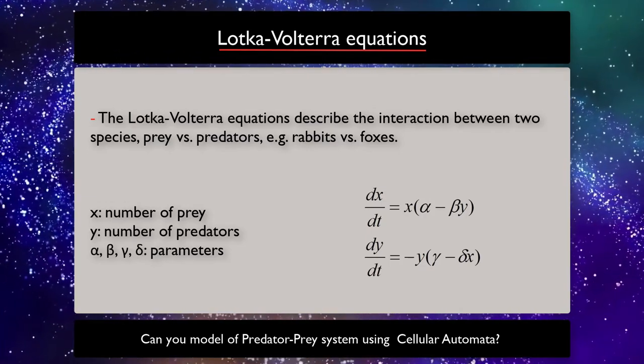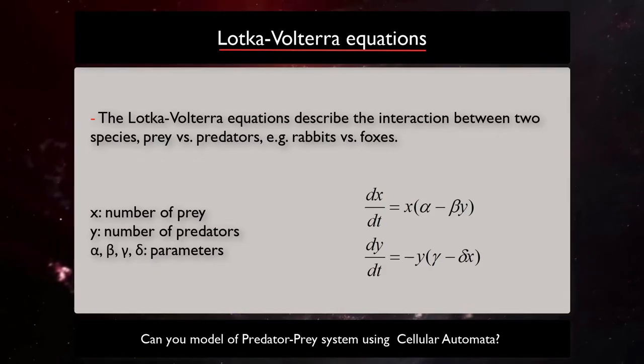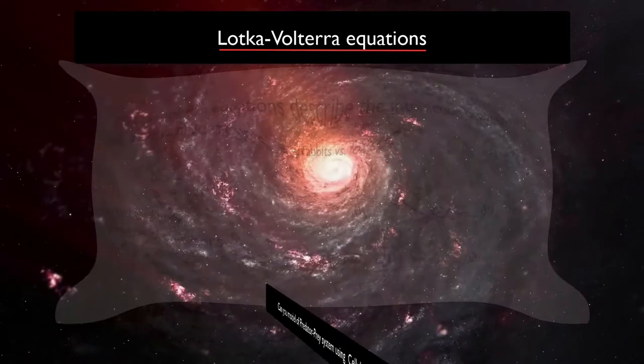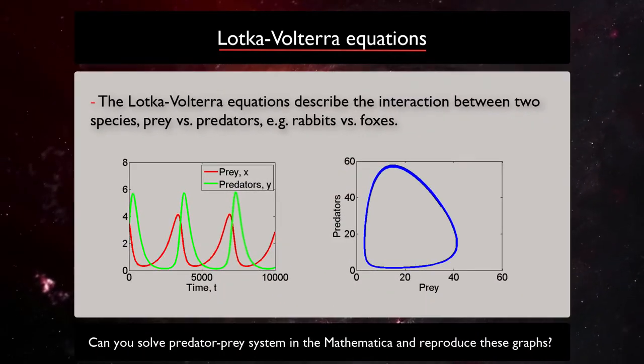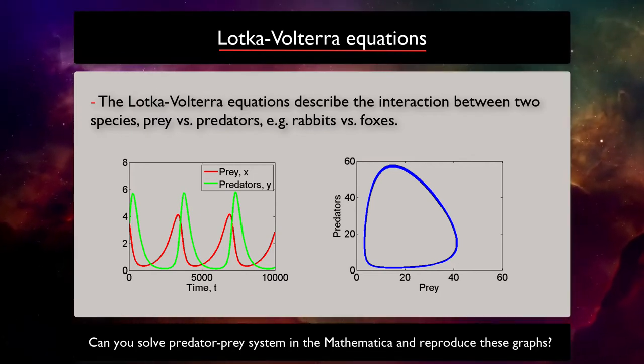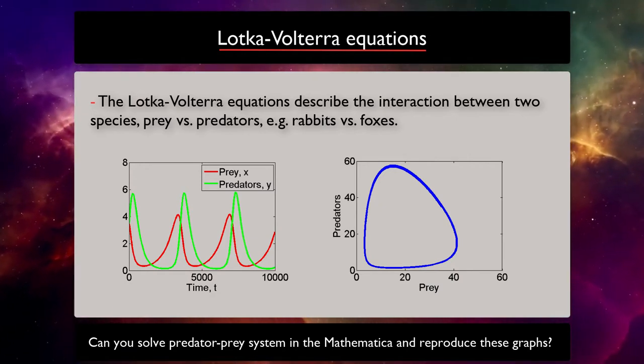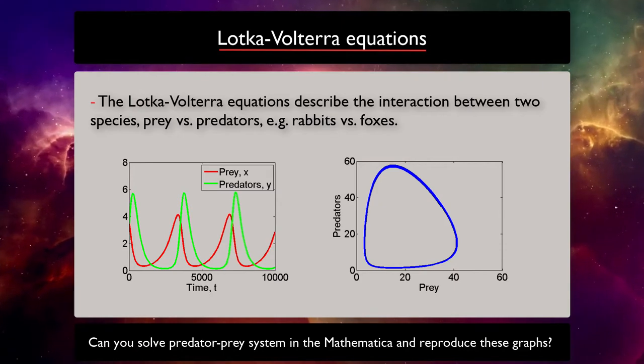The population change through time according to a pair of equations you can see here with a set of parameters. We can solve these equations and come up with graphs which show the change of the populations of predators and prey over the time, or we can plot the phase plane of the system.